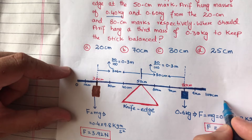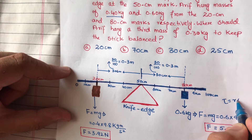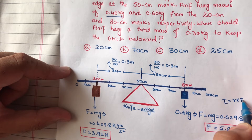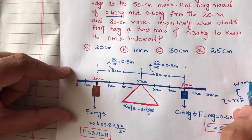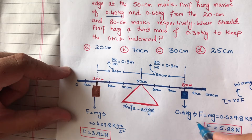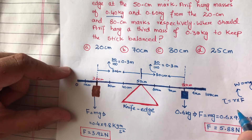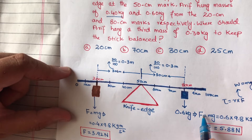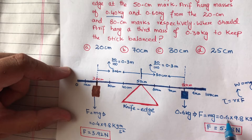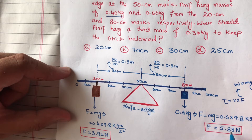Now we will convert the masses to forces. We will change this mass — the 0.6 kg mass — by multiplying by 9.8 meters per second squared, so it equals 5.88 Newtons.